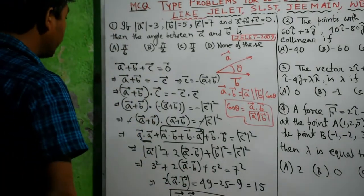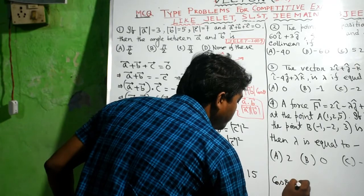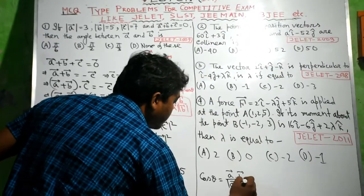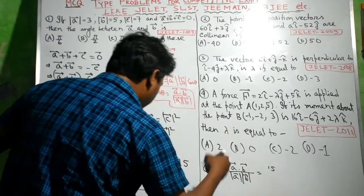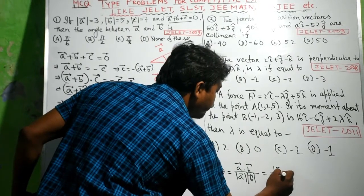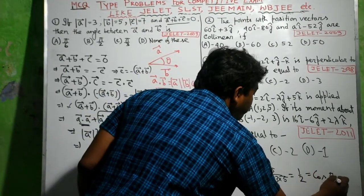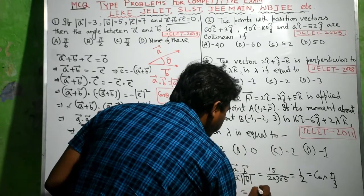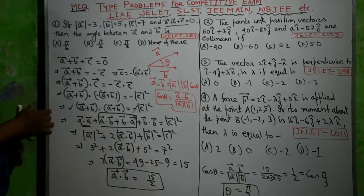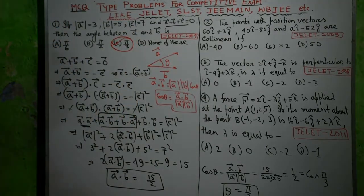So what is the angle between them? Cosine theta equals A dot B divided by mod A times mod B. I have A dot B equals 15 by 2, mod A equals 3, mod B equals 5. So cosine theta equals (15/2) divided by 15, which equals 1/2. That is cos 60 degrees or cos pi by 3. So theta equals pi by 3. The angle between the vectors is pi by 3. The option is C.